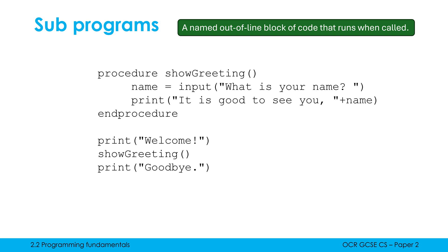Here is some OCR EOL code. What I've got at the top here is a subprogram with a name — show greeting. That's what I mean by it being named. I give it a name like I would give a variable or an array a name. I give it a name which is formally called the identifier. So here it's called show greeting.